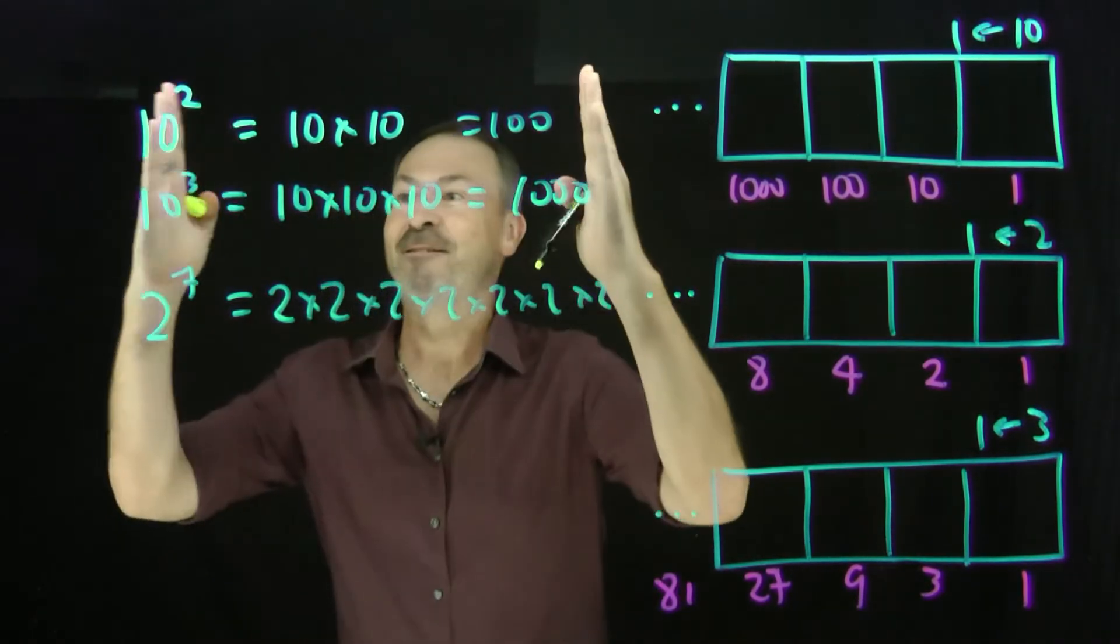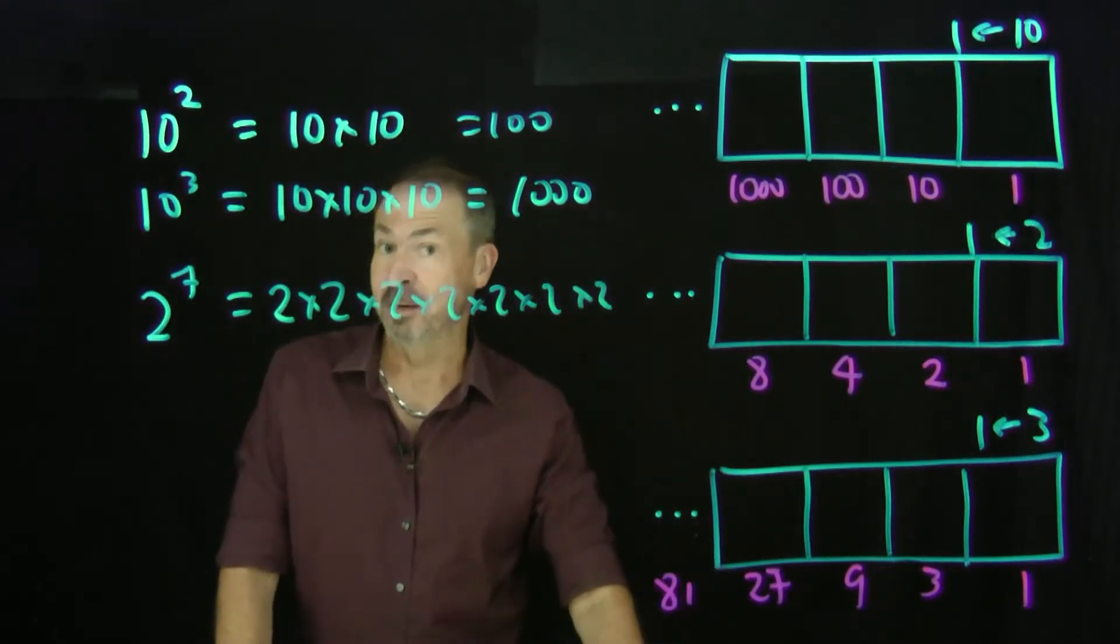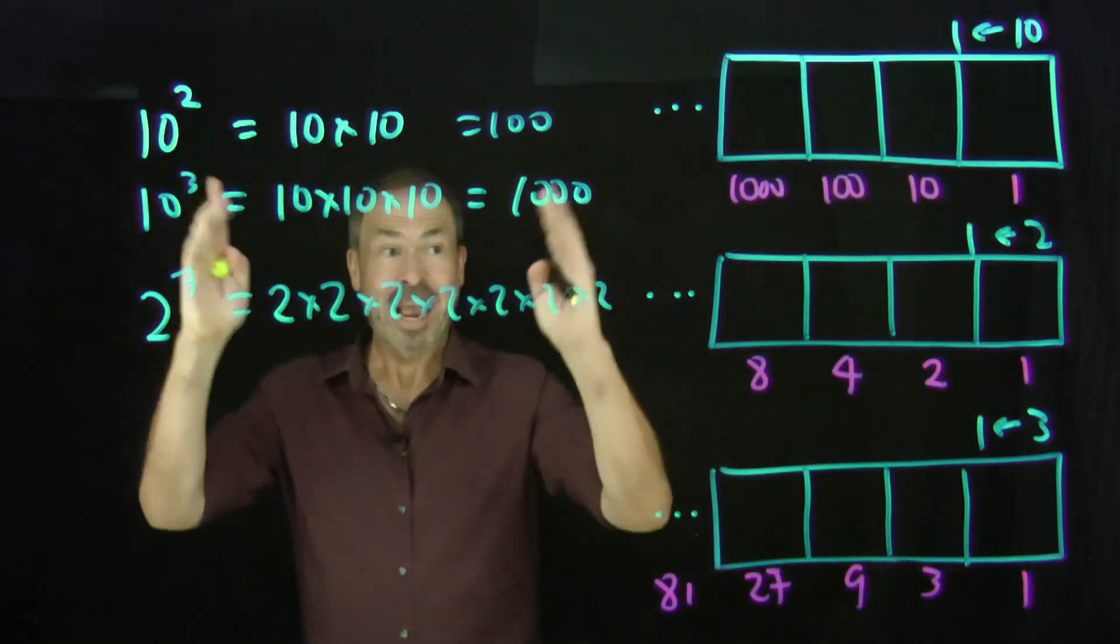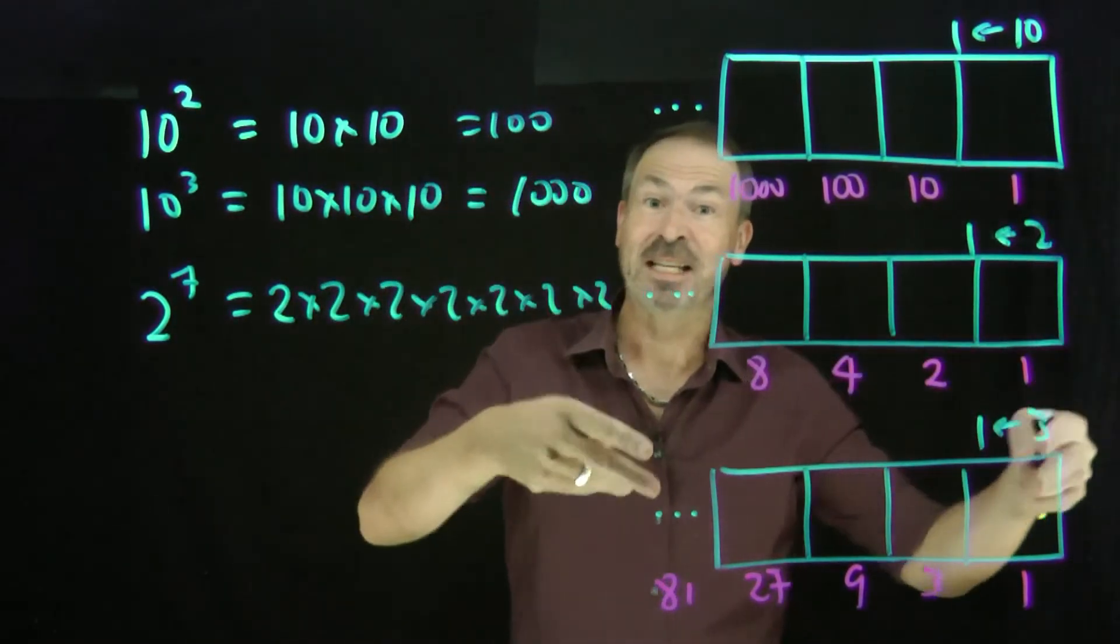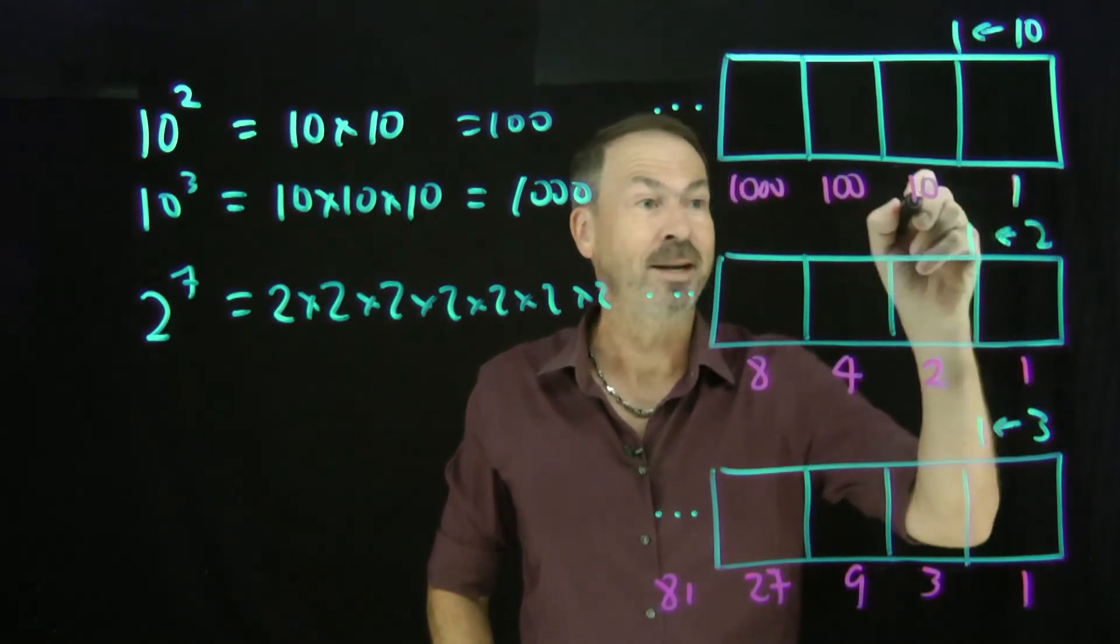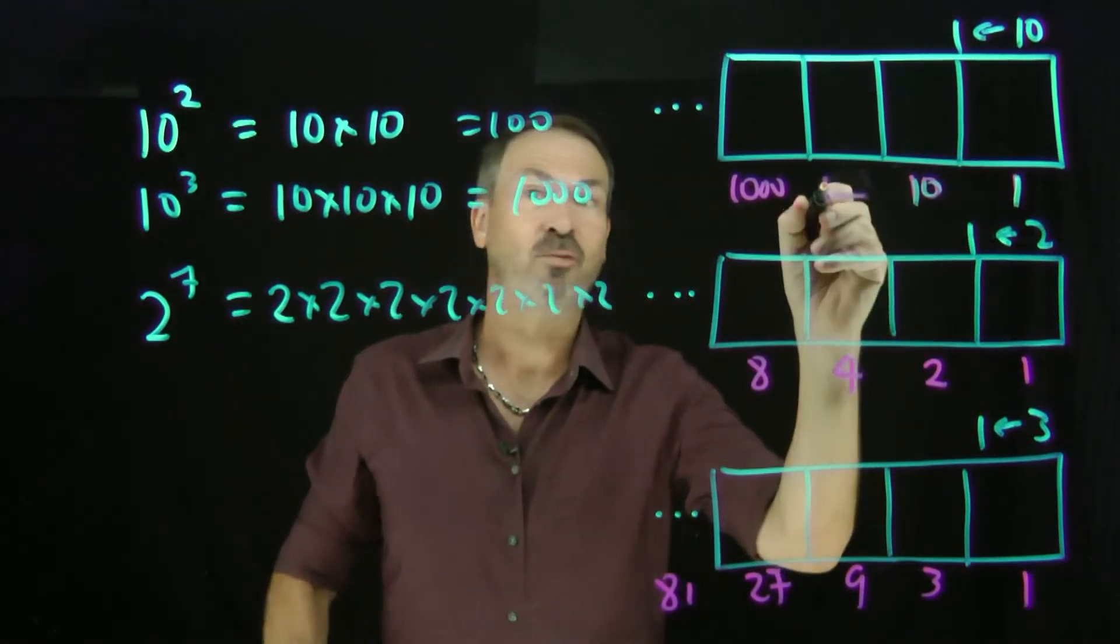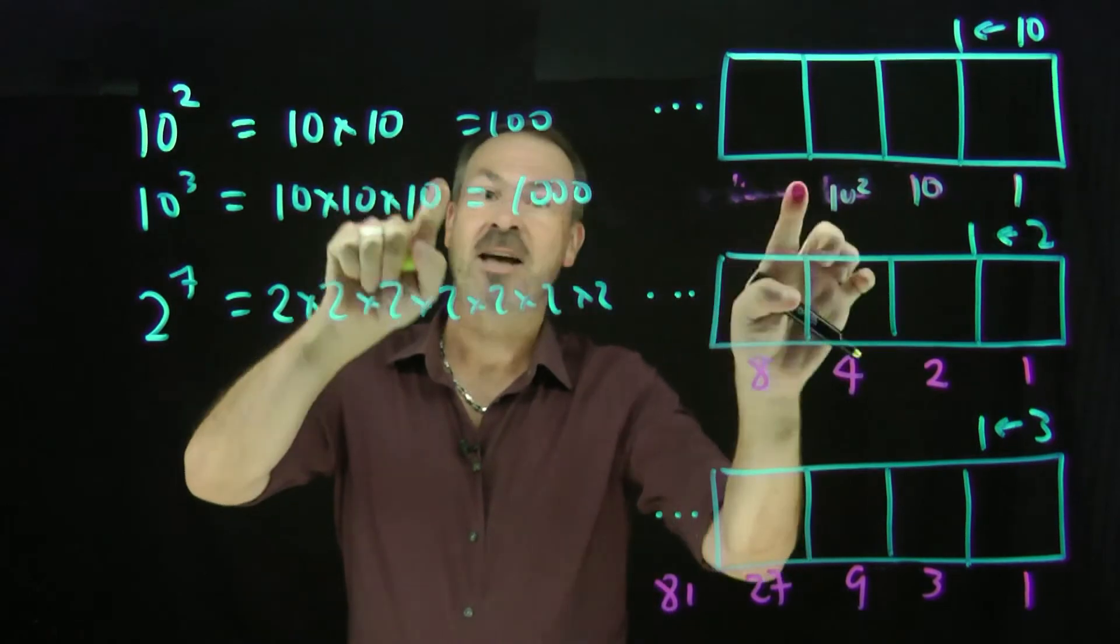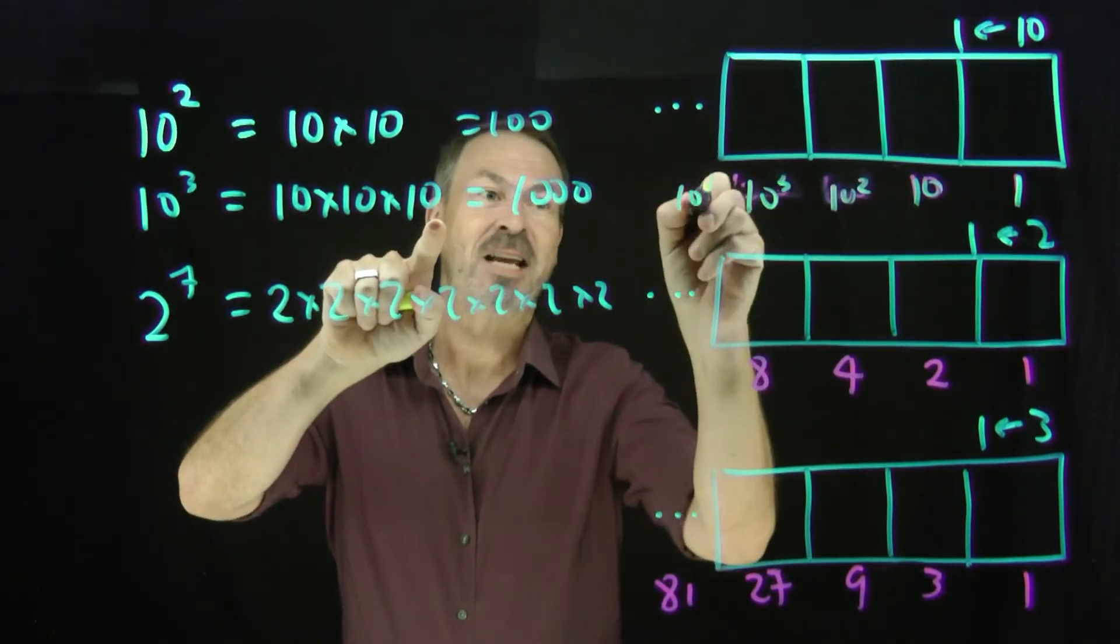So there's a handy notation for repeated multiplication, which is actually very handy because it now unifies these machines. For example, I could rewrite the numbers here for the dot values of a 10 machine as 1 and 10. 100 is really 10 squared. 1,000 is really 10 cubed, 10 to the fourth, and so on.